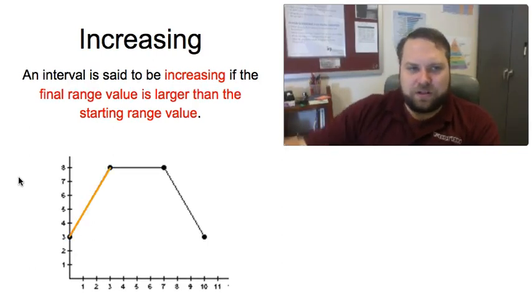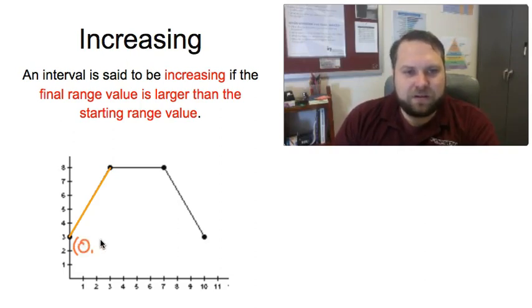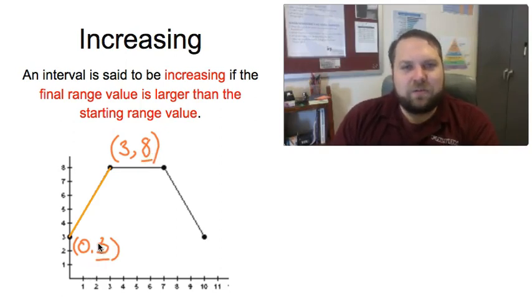So if I take this orange interval that we were looking at before, I can get ordered pairs for the starting point. Remember we go left to right just like in reading. So this starts at the point (0,3) and ends at the point (3,8). I want to look at my range values. Remember range is the second number in the ordered pair, and I started at 3 and I went to 8, which means that my range value increased over the course of that interval. So I would describe that interval as being increasing.